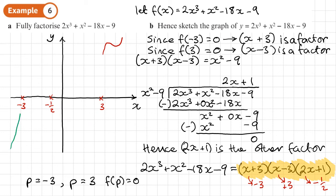Sketching the curve: up through negative 3, down through negative one half, and back up through 3. The graph crosses the y-axis where x equals 0 — substituting 0 into the polynomial leaves just minus 9, so the y-intercept is at negative 9.